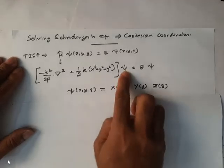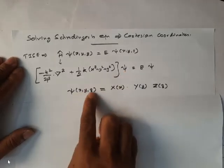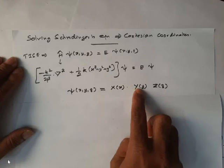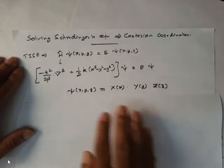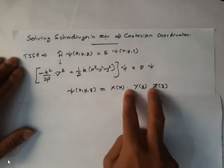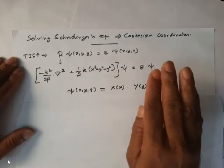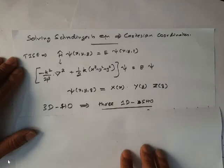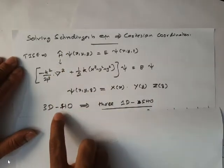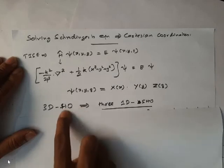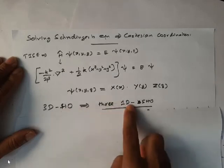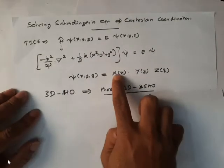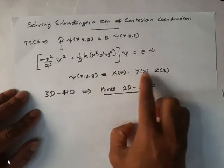How to solve the Schrödinger equation using Cartesian coordinates: the time-independent Schrödinger equation can be written as Hψ = Eψ, where the function depends on x, y, z coordinates. The Hamiltonian for the isotropic oscillator in Cartesian coordinates consists of the kinetic energy part −ℏ²/2μ times the Laplacian operator, plus (1/2)k(x² + y² + z²) as the potential energy. This equation can be solved by the method of separation of variables.